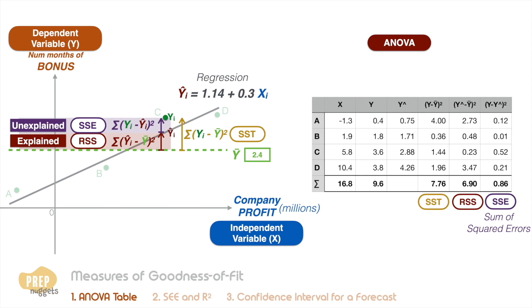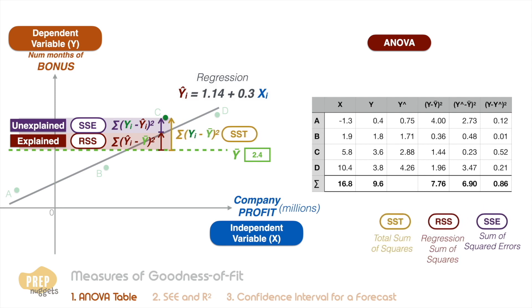If you recall from the last lesson, the least squares method of regression allows us to find the straight line that minimizes the SSE.